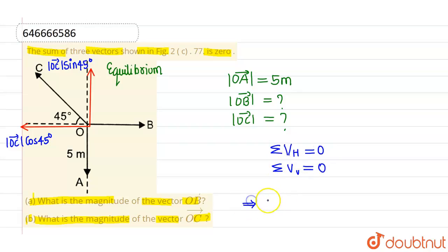Now in horizontal direction, if I apply this particular equation, I can say that magnitude of OB vector must be equals to magnitude of OC vector into cos of 45 degrees.